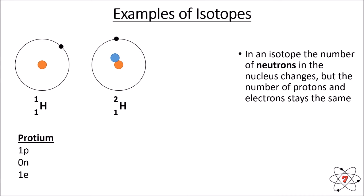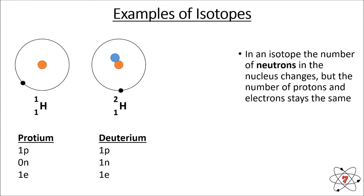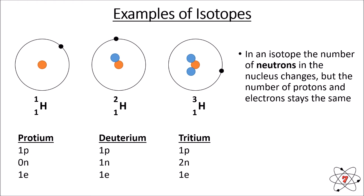We can add a neutron to hydrogen and when we do we have a different isotope. This version of hydrogen is called deuterium: one proton, one neutron, and one electron. We can have a third isotope as well — with two neutrons: one proton, two neutrons, one electron.